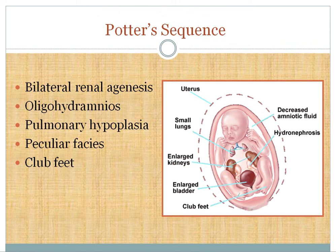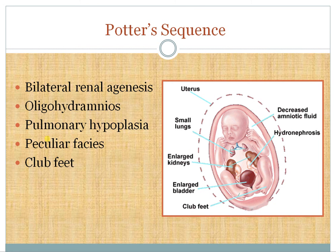The mechanism is: normally the fetus urinates into the amniotic fluid, and that fluid is swallowed and enters the lungs, contributing to lung maturation. When there is renal agenesis or obstruction to urine flow, urine output is absent, leading to oligohydramnios. Reduced amniotic fluid causes poor lung development and pulmonary hypoplasia. Less fluid in the cavity also causes the fetus's hands to compress the cheeks, producing a peculiar facial appearance, and the feet develop club feet. This sequence of events due to reduced urinary output is known as Potter's sequence.